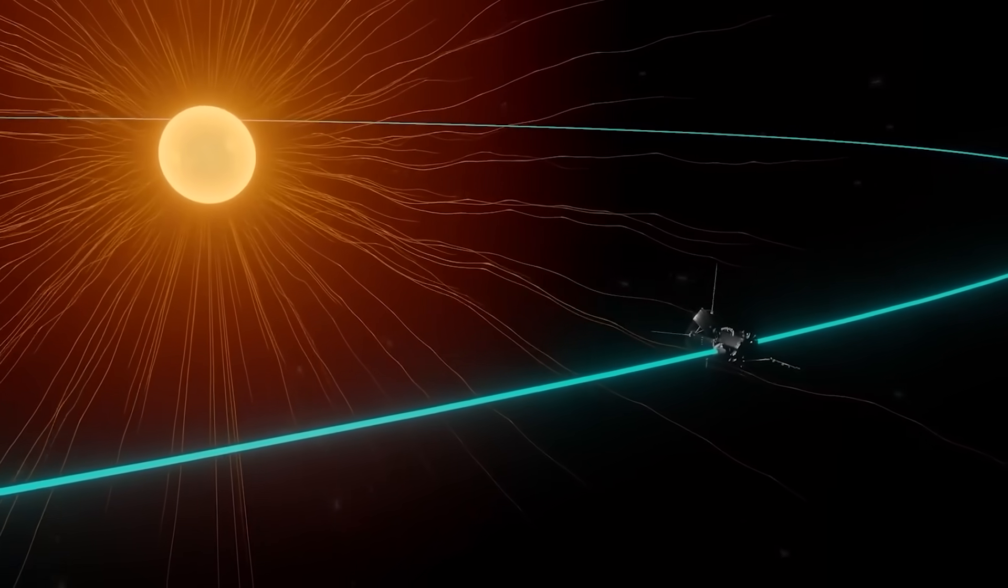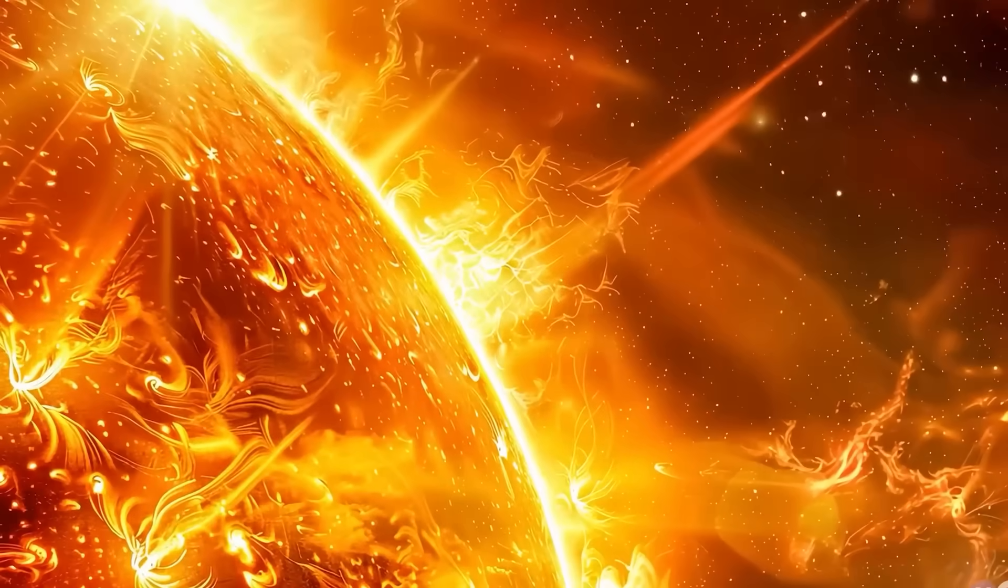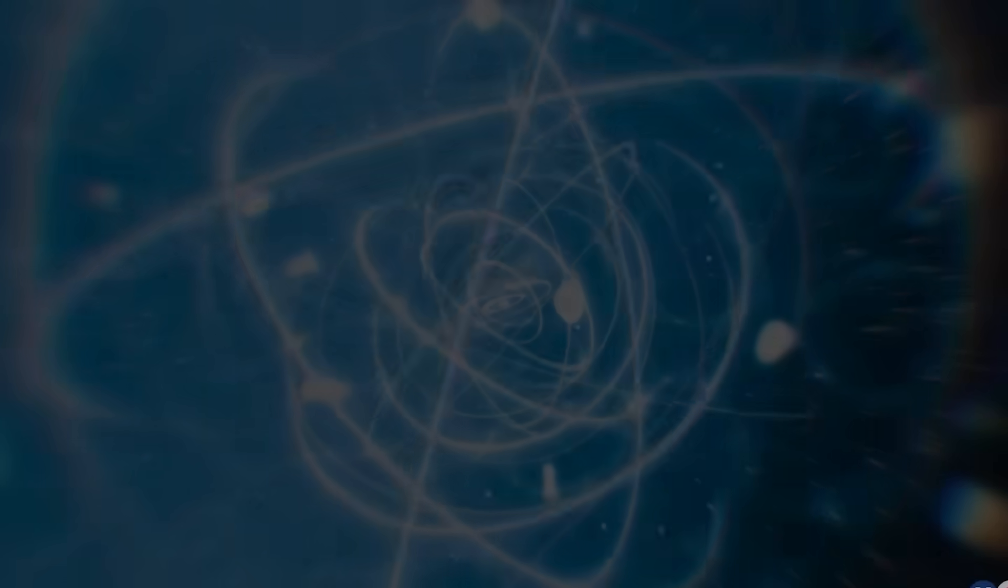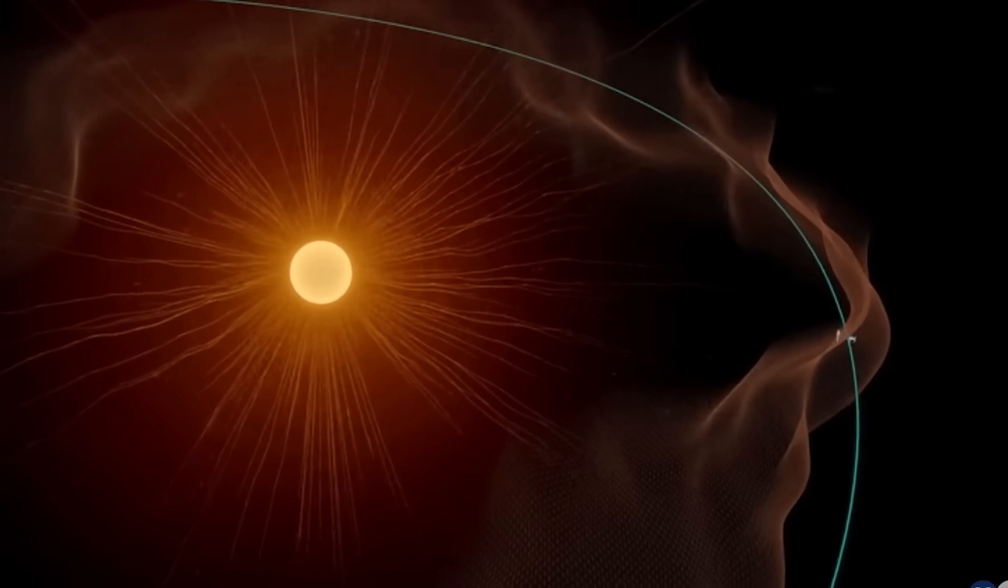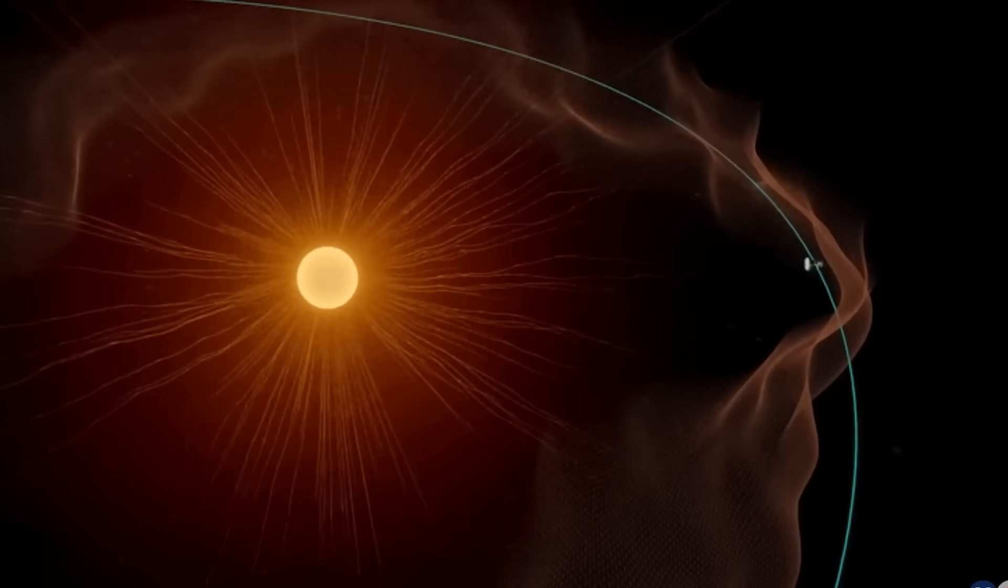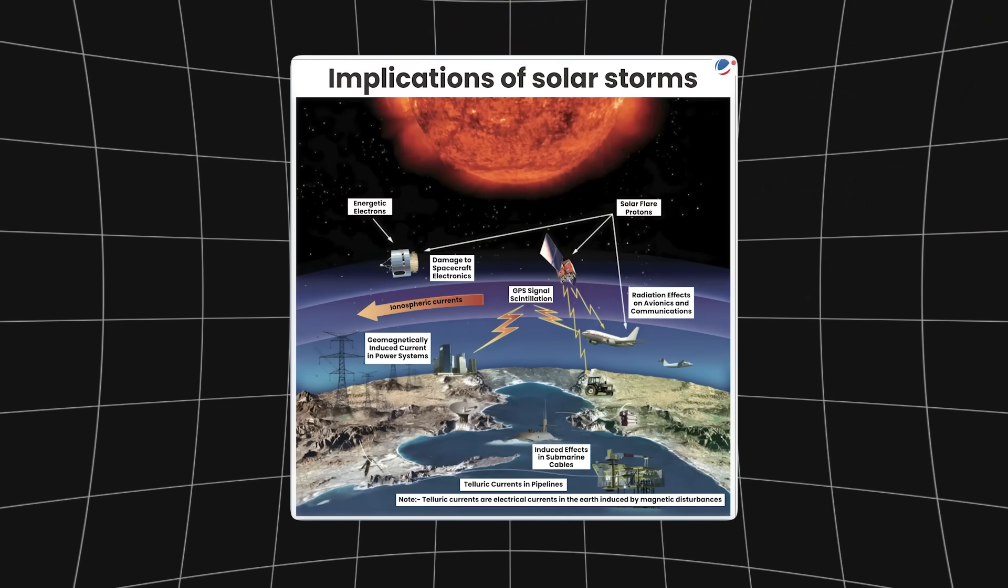If confirmed, this discovery could reshape our entire understanding of how the sun's energy moves through the solar system. It may even force scientists to rethink space weather models, which predict how solar storms impact satellites, power grids, and even astronauts in deep space.